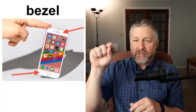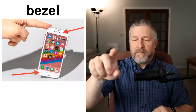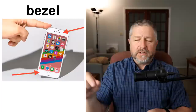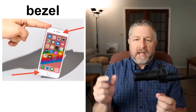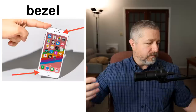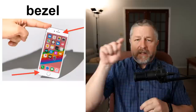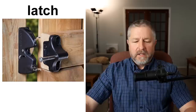Bezel. Your phone has a bezel around the screen, and your computer has a bezel around the screen too — it's the area around the edge. Phone companies are always trying to make phones with smaller and smaller bezels, so the whole front of the phone becomes screen. My phone has fairly small bezels.